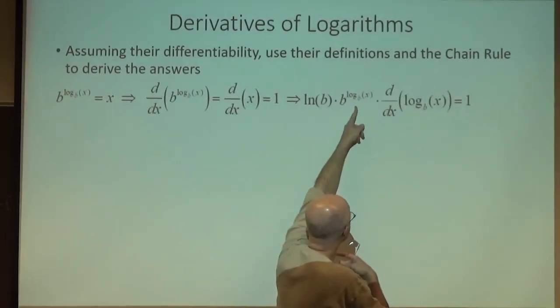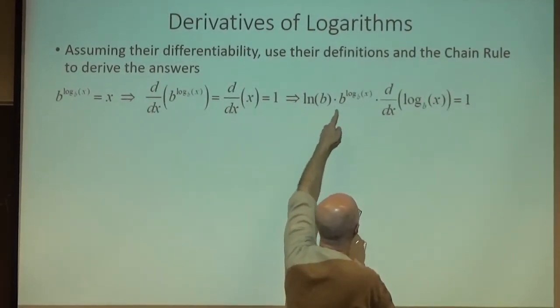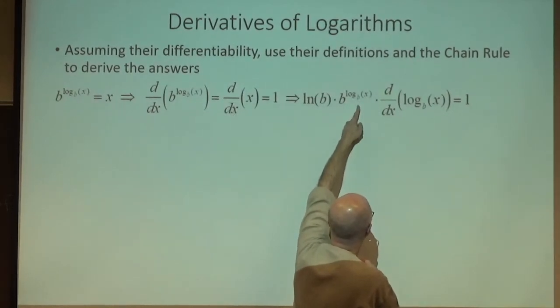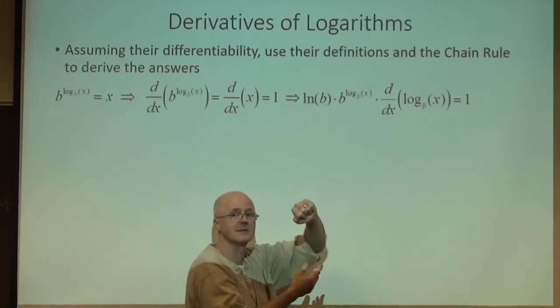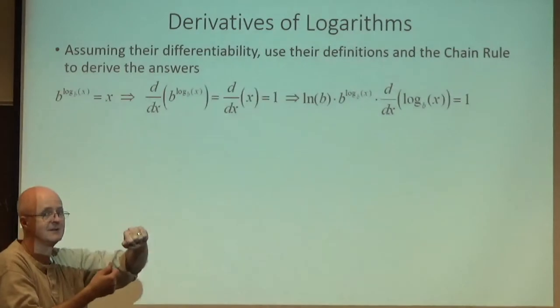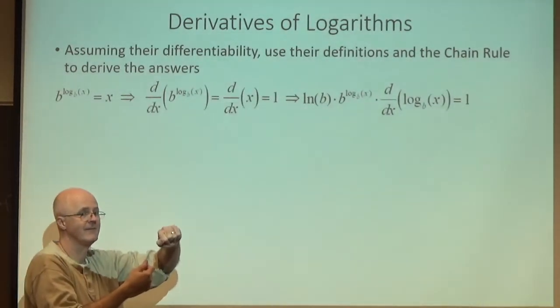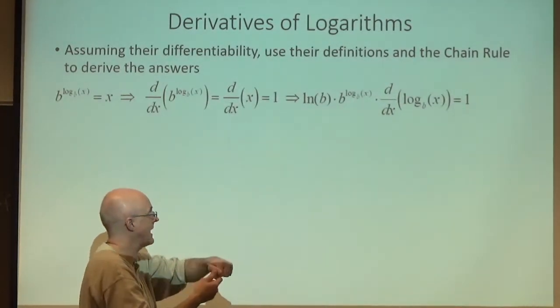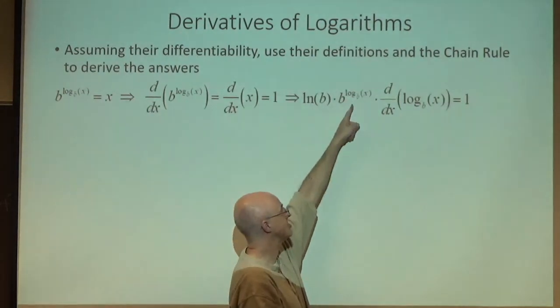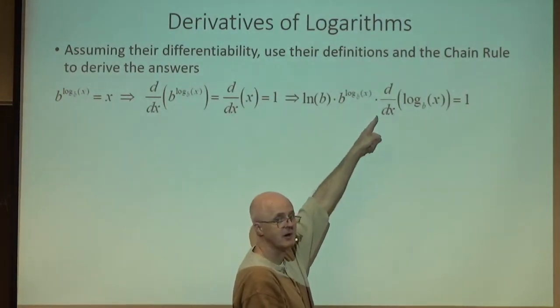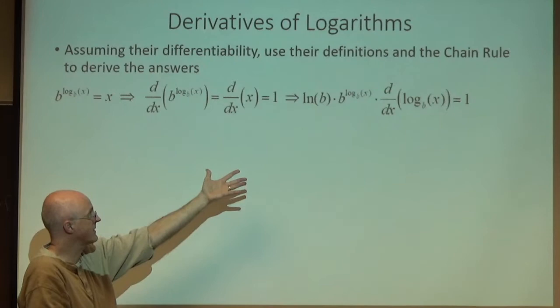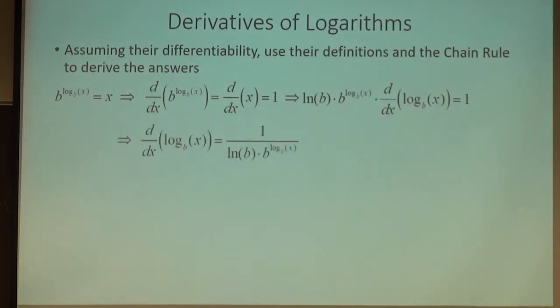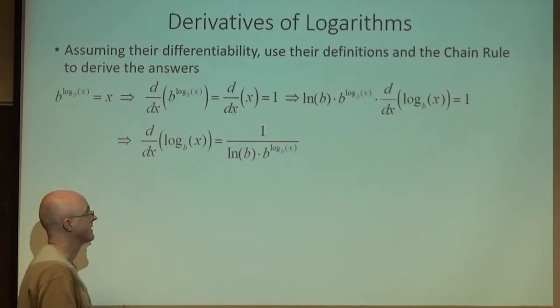So the derivative of that is this, except I have to plug in the inside function there. This is the derivative of b to the x, except I have to evaluate it at the inside function, times the derivative of the inside function. That's the chain rule right there. Kind of complicated, but you could do it if you were careful. And the chain rule says take the derivative of the outside function, plug in the inside function into that. Multiply times the derivative of the inside function. And that's an equation we can just solve algebraically for the derivative of log base b of x.